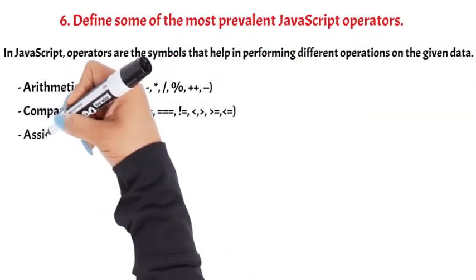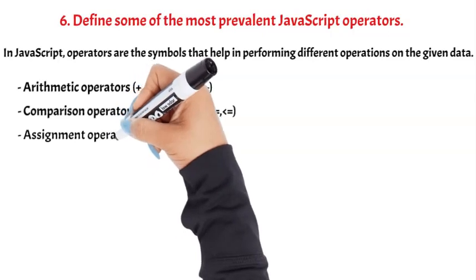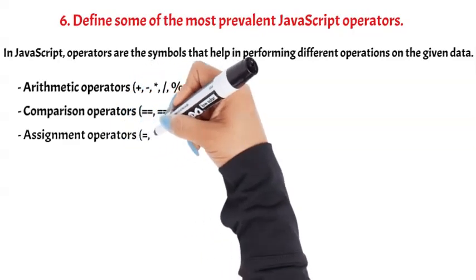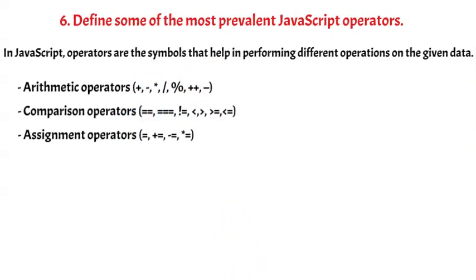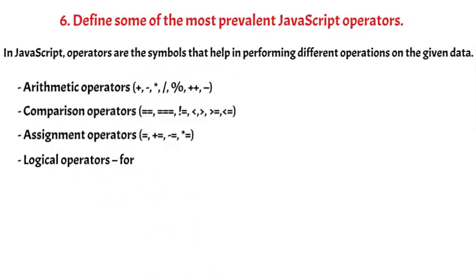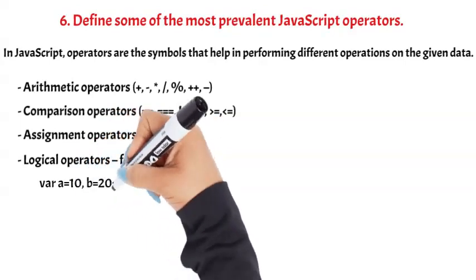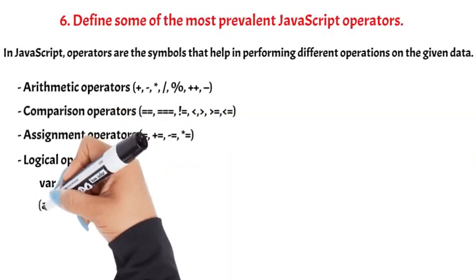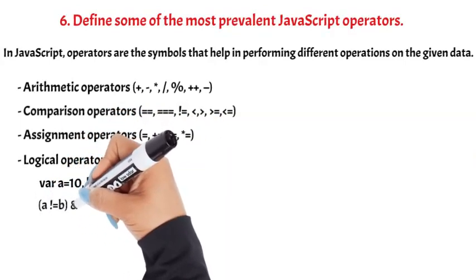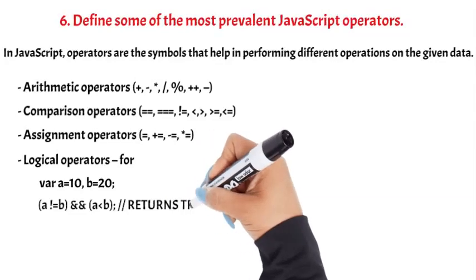Assignment operators: =, +=, -=, *=. Logical operators example: var a = 10, b = 20; (a == b) && (a < b).